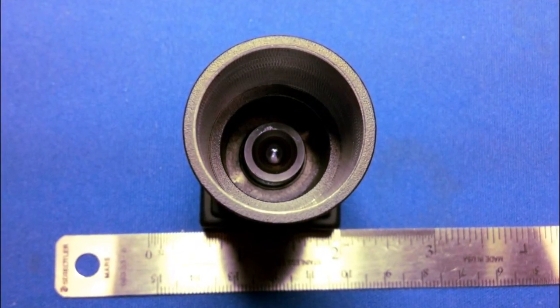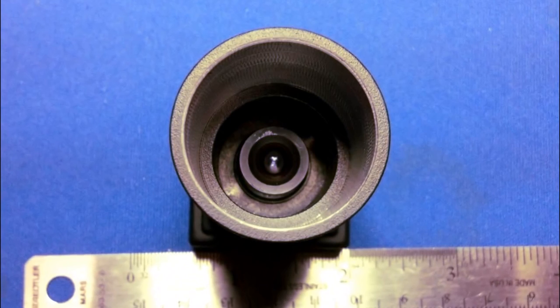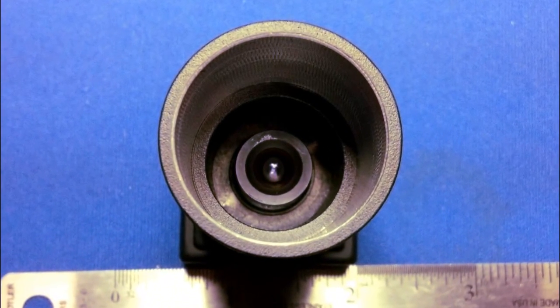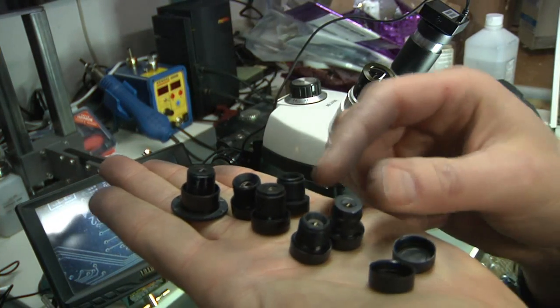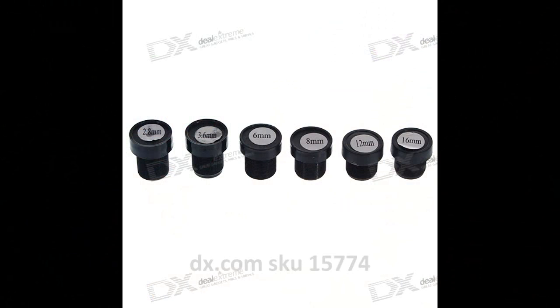Looking down the barrel, you can see the camera lens that I had to change out. This is either a 12mm or a 16mm C-mount lens. I got it as part of a C-mount lens kit from Deal Extreme for like $15.